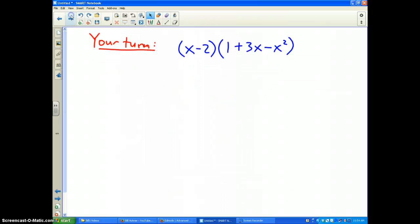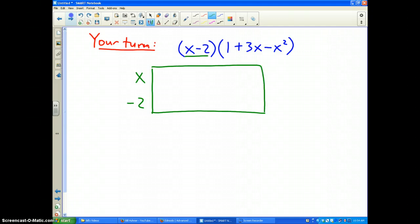Now it's your turn. I want you to try this one. Try the box method and see if you like it or not. Alright, I'm going to notice (x-2). I'm going to build my box, (x-2). And then I've got three terms over here. But this term has to go first. It's not in standard form. So I've got to put -x² first,